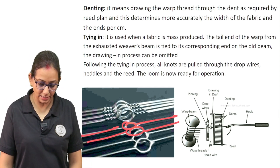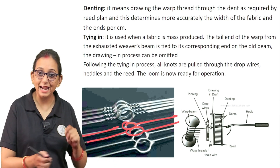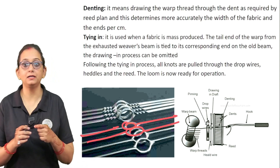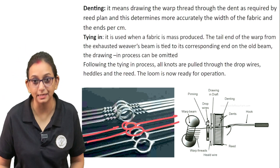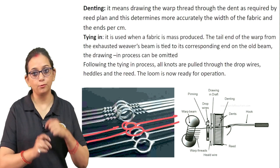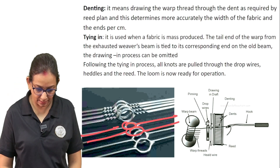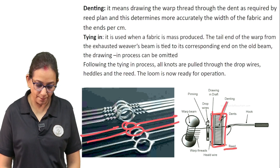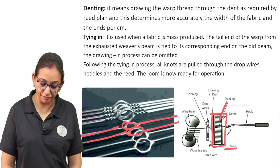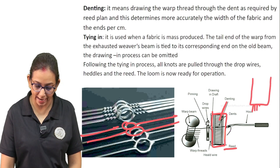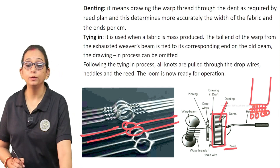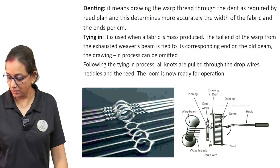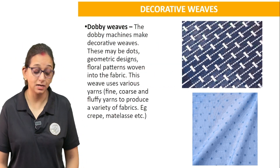Denting means drawing the warp threads through the dent. Then the tying-in process takes place: when the fabric is being produced, the end of the warp from the fabric is tied so the fibers will not come out — this is known as tying in. After the tying-in process, all the knots are pulled through the drop wires, and the loom is ready for its operation.